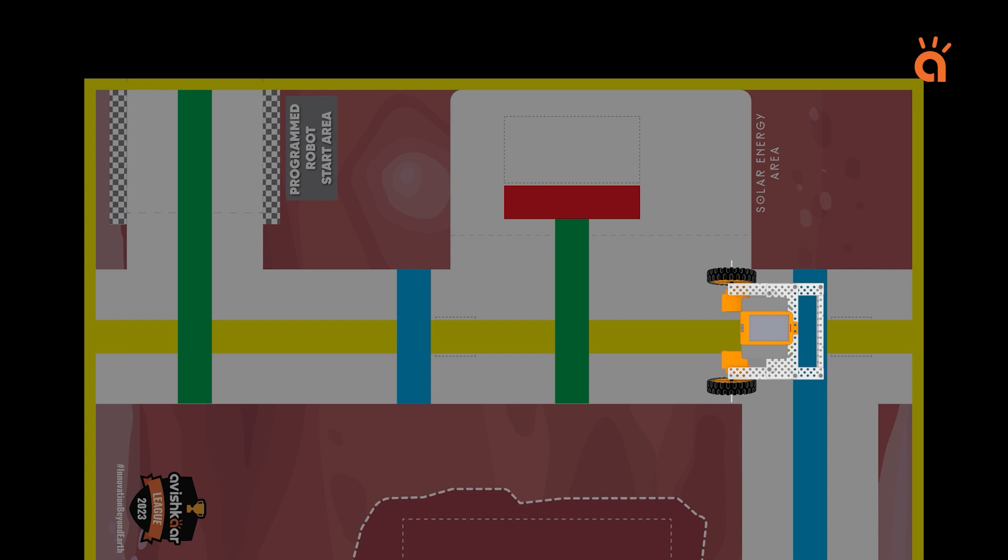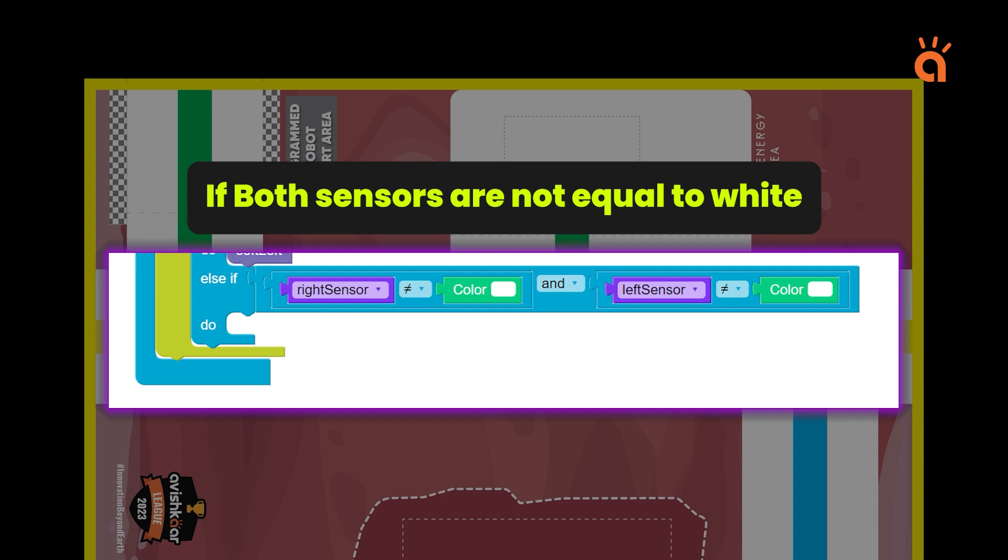Also, all these conditions can be grouped under one common condition, which is: if both the sensors are not equal to white. Whenever this condition is true, we will further check the color of the intersection reached.